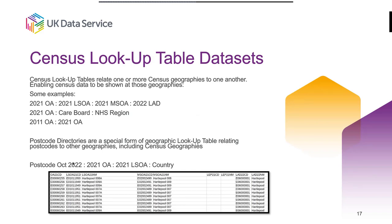A postcode directory maps a postcode to output areas, LSOAs and countries. This is just an example of a geographic lookup table, and you can see it uses those nine-digit geographic identifiers — nine-digit IDs for output areas mapping to nine-digit IDs for LSOAs, which map to nine-digit IDs for MSOAs, which in turn map to nine-digit IDs for local authority districts. Lookup tables are simply a way of mapping different types of geography.